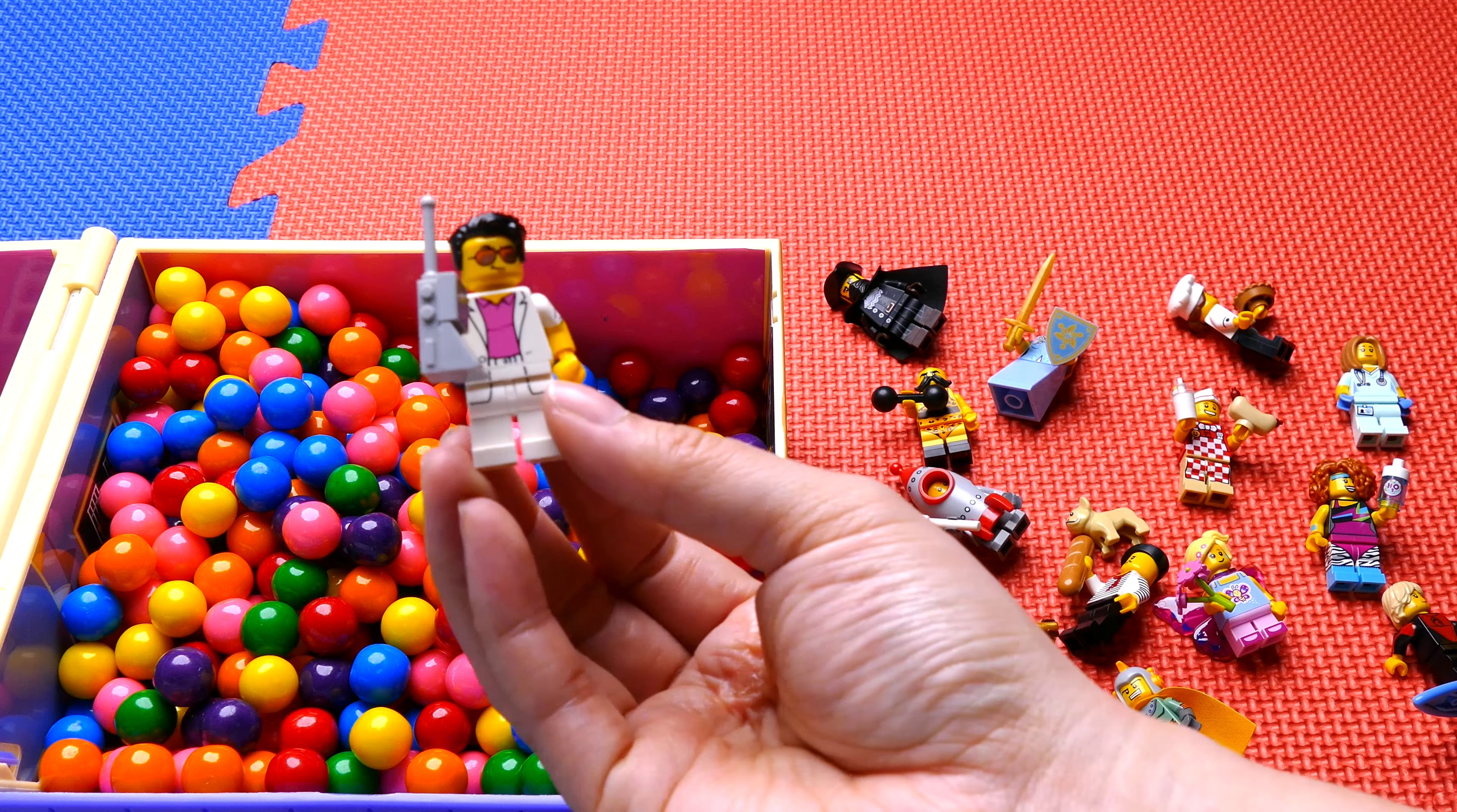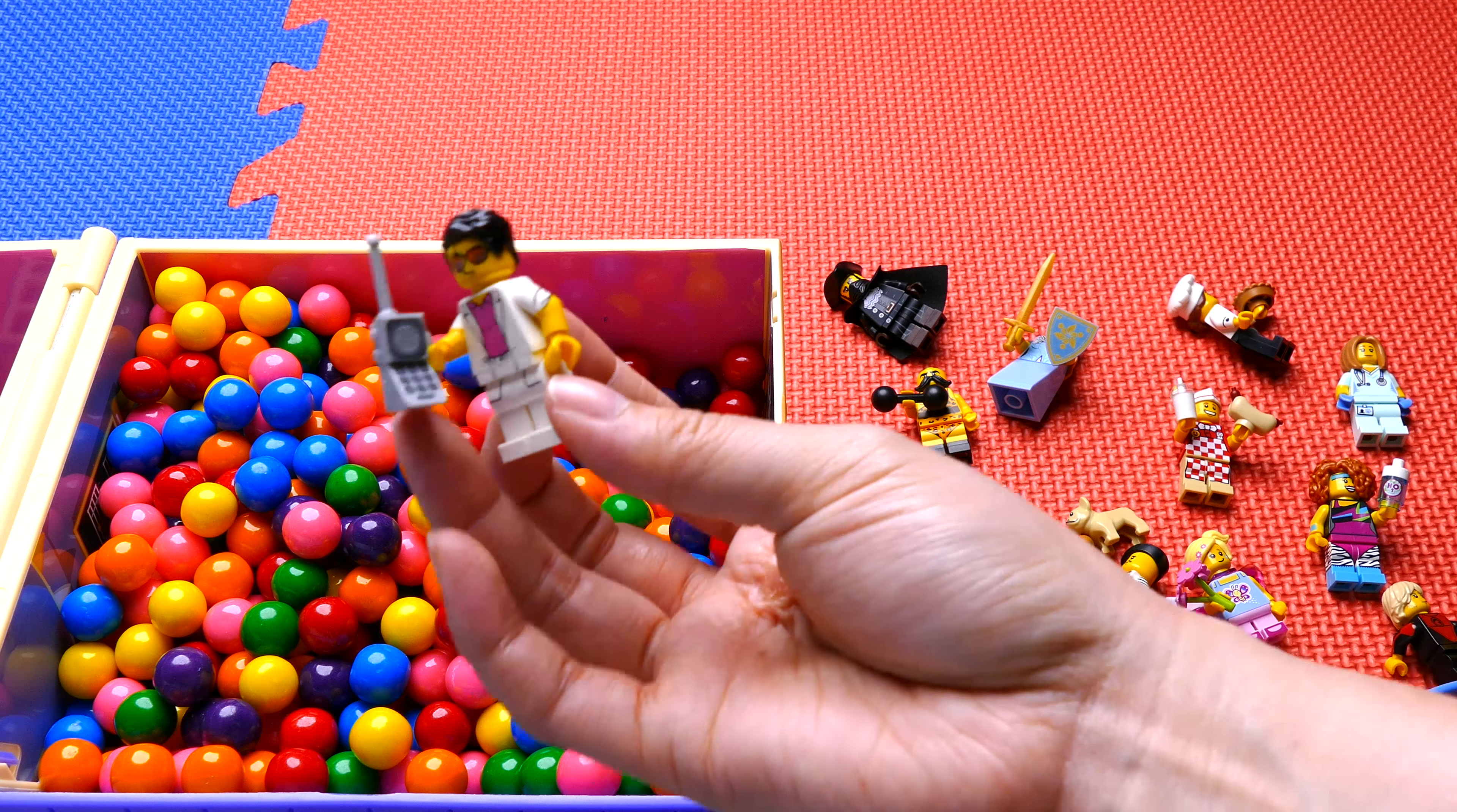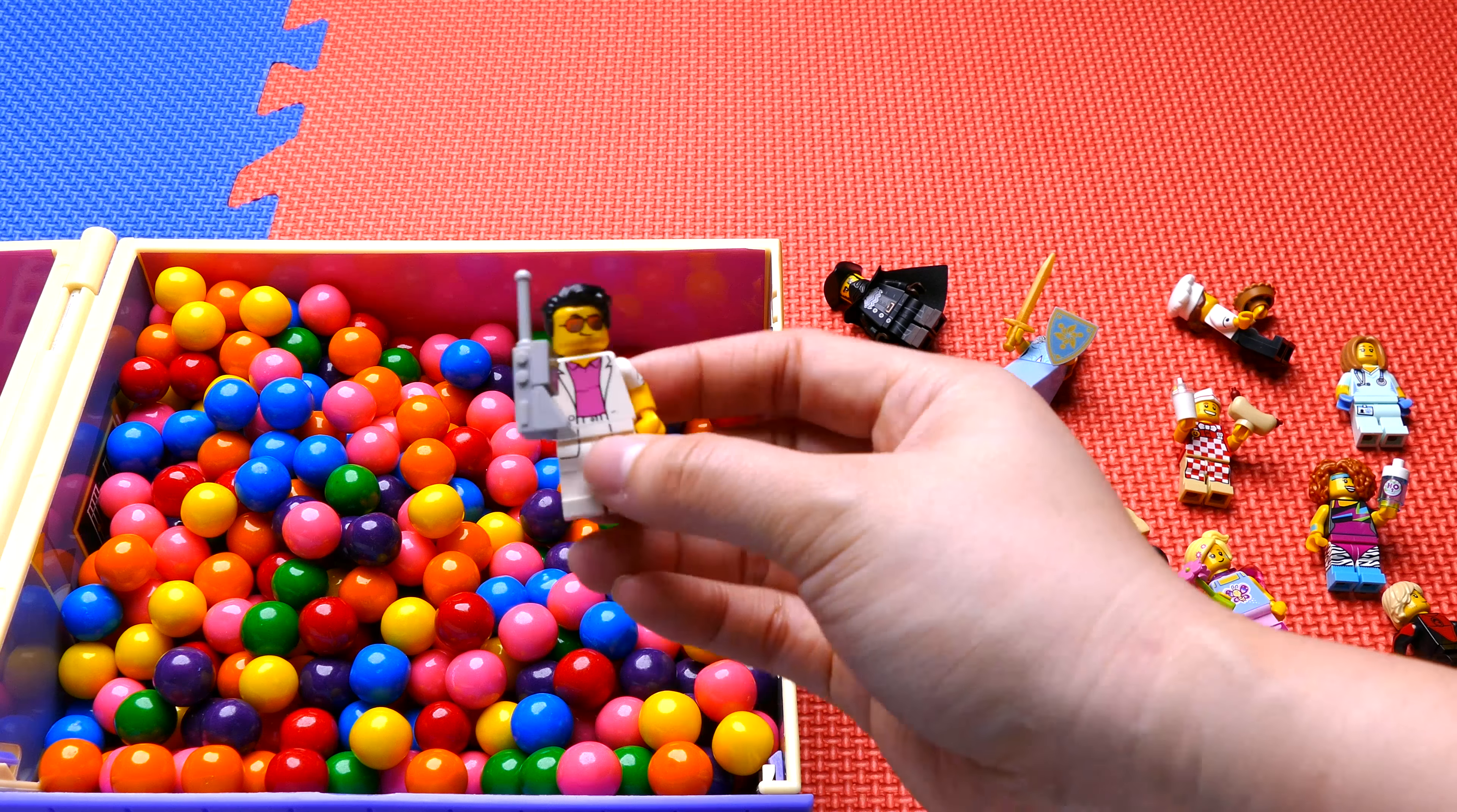This is Yuppie. That's his name. He is an 80s LEGO figurine who holds very old cell phones and wears a white suit and pink shirt and sunglasses.